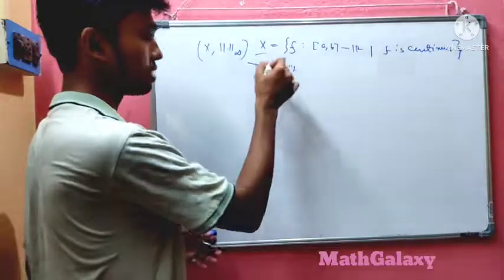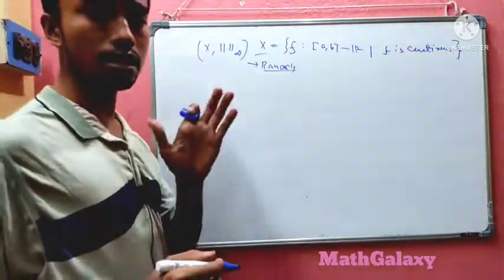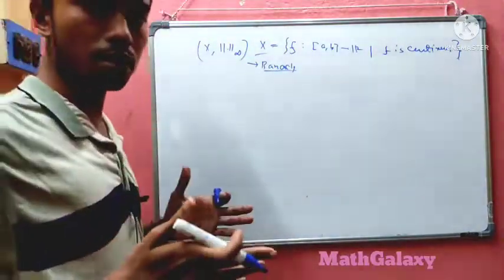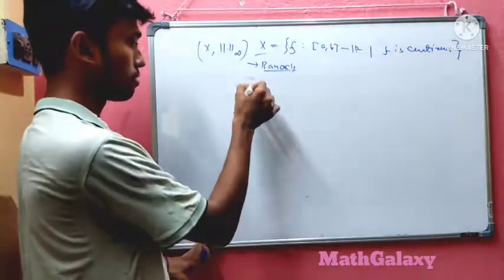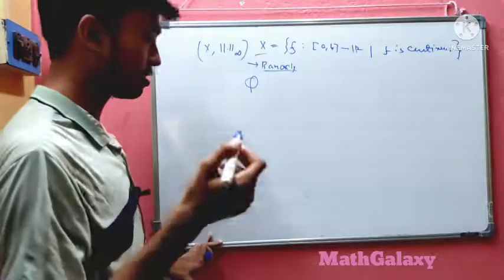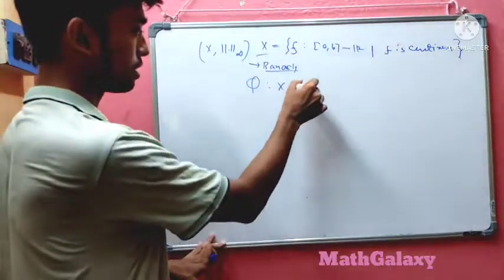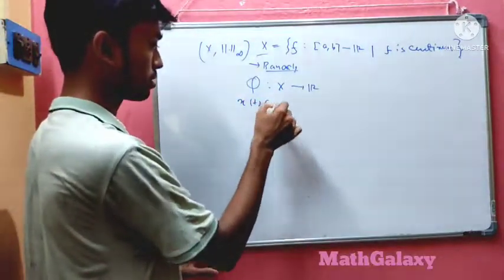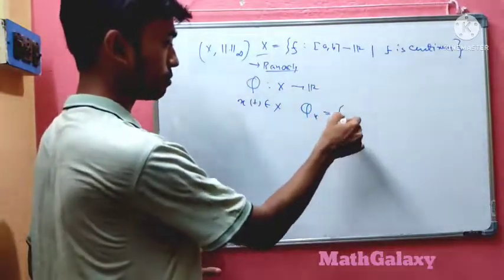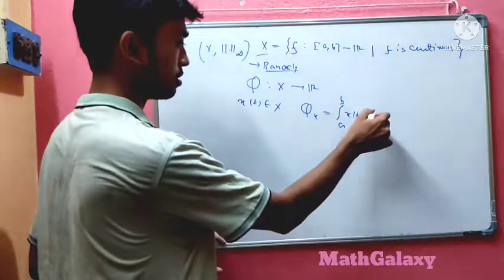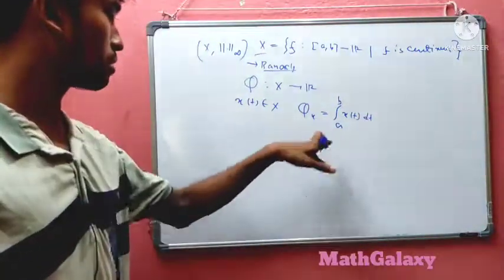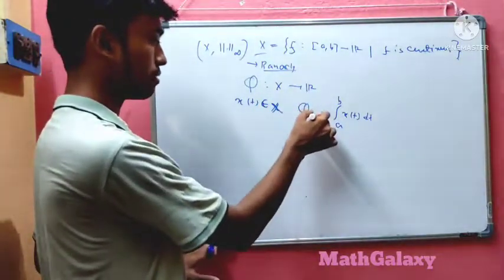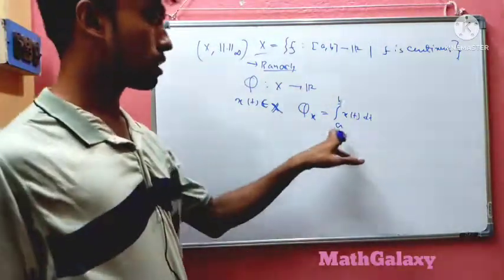We define a linear functional on this space X. Let φ map from X to ℝ, defined by the following rule: if x(t) belongs to X, then φ(x) is defined as the integral from a to b of x(t) dt. So if a continuous function belongs to the space X, we can define φ(x) via this integral rule.